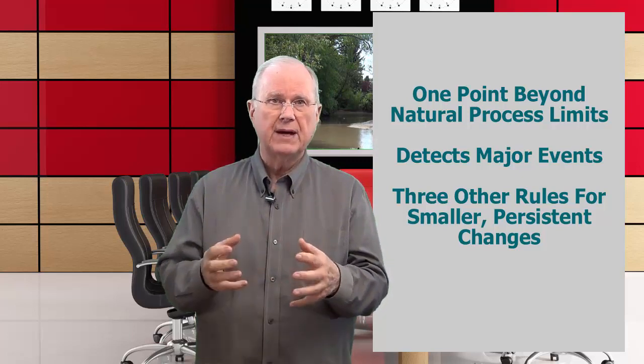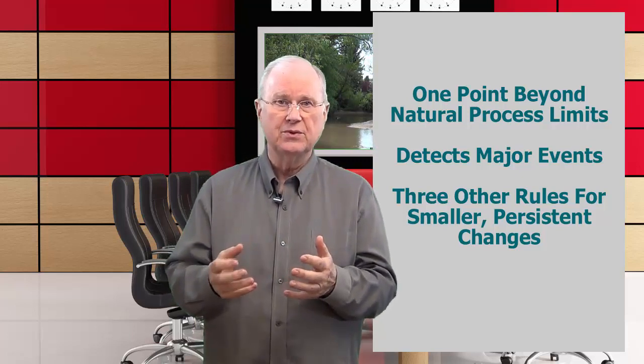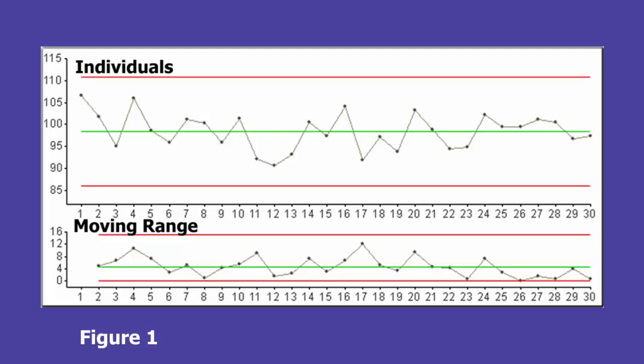Taken together, those rules are about as efficient at detecting change as anything that you can use. Here are the data from figure one, and I've turned all four tests on. What we see is that there's no evidence within the data of any signal or real change. Someone might get excited and point to point 12 as the lowest — an all-time low — but it's not detectably different from the other data. You can say the same thing about point one, the highest. Our tests reveal that there is no difference between that and the other points in the data set. We would say that this data set is homogeneous, or in-control, or that it shows only normal random variation, or that it's stable and predictable.